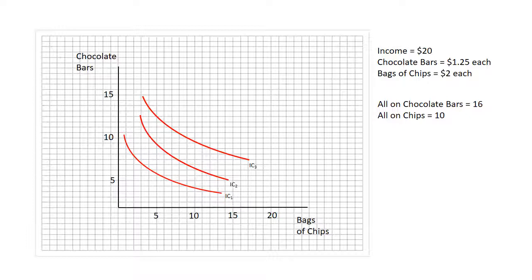Conversely, if you spend all your money on chips at $2 a bag, you can get 10 for $20. There is the budget constraint that tells us all of the different combinations of chocolate bars and bags of chips that we can get.